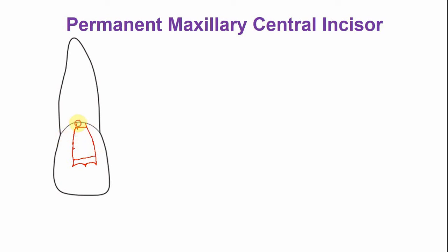This tooth has a single root canal that tapers towards the apical foramen, and it may curve either in a distal direction or in a labial direction. In summary, from the mesodistal aspect, this tooth has three pulp horns and a single root canal.